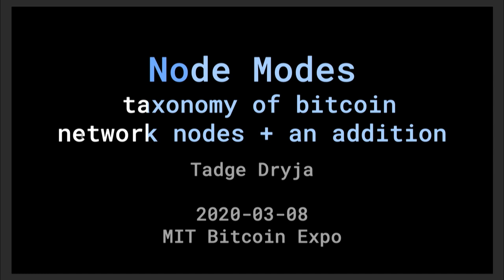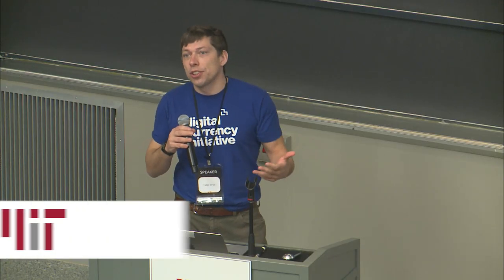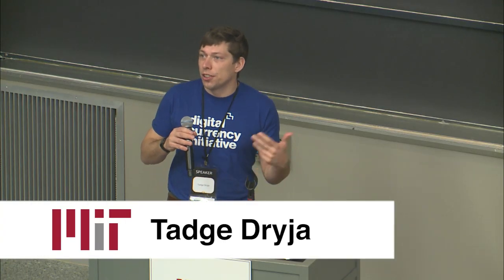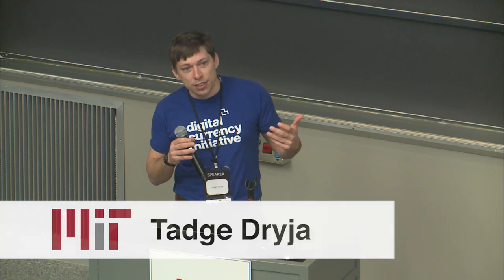It's Utreexo, but what happened is James — James Lobjoy, head of the MIT Bitcoin Club — said don't give a talk about Utreexo because you already did that last year. So I started a different set of slides, and then on the schedule it says Utreexo. So I'll sort of do both.